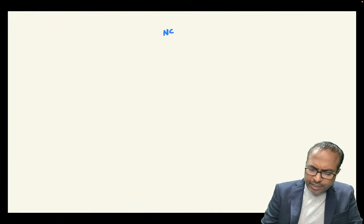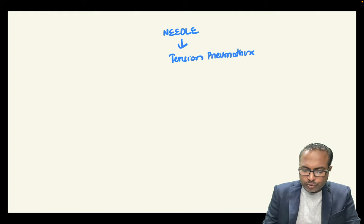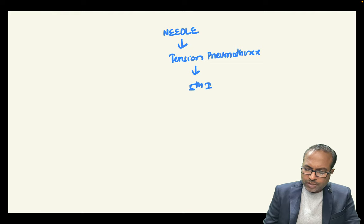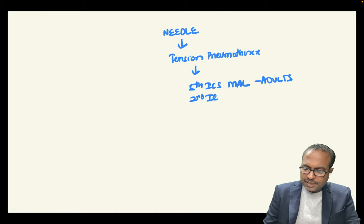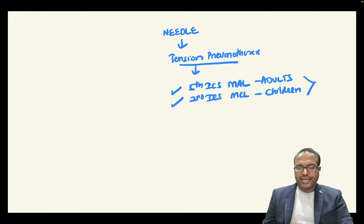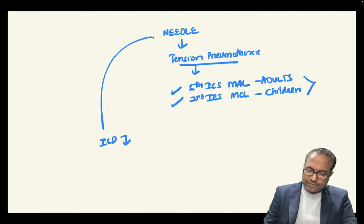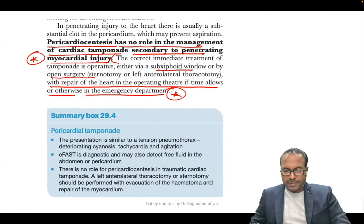Another update: needle placement for tension pneumothorax. Old Bailey was confusing; now it is clear. In adults: 5th intercostal space, mid-axillary line. In children: 2nd intercostal space, mid-clavicular line. This is updated in Bailey and Love without controversy. ICD intercostal tube is placed in the safety triangle — that is not a new update.